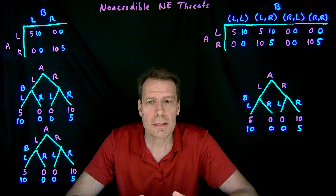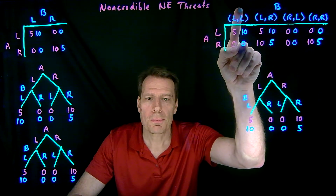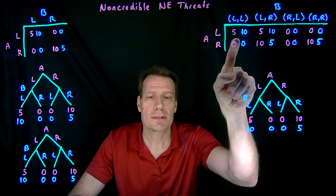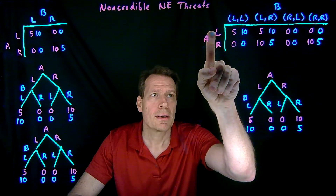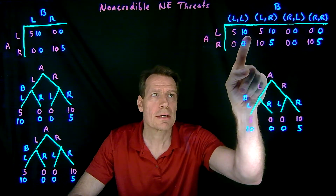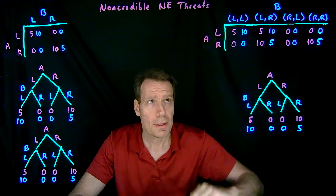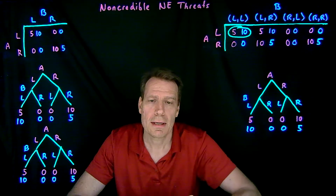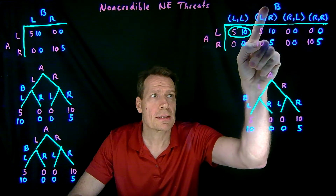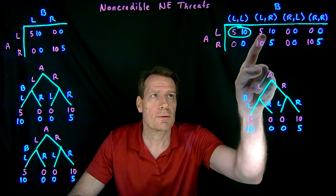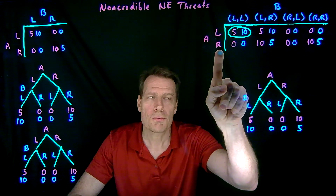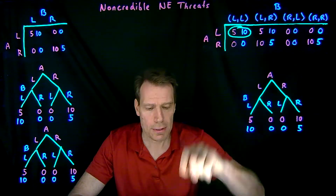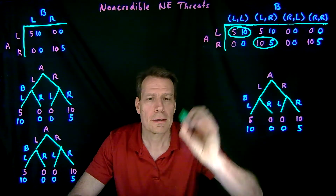Solving for Nash equilibria: if the British player picks her first strategy (always left), the American chooses between 5 and 0, so left is the best response. The British player then gets 10, confirming this as a Nash equilibrium. If she picks the second strategy (always right), the American best responds by going right for 10. The British player gets 5 by playing this strategy, giving us a second Nash equilibrium.